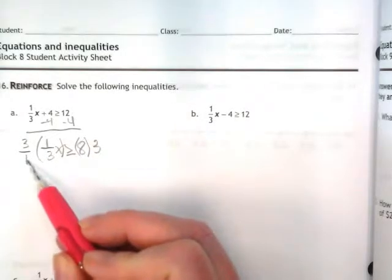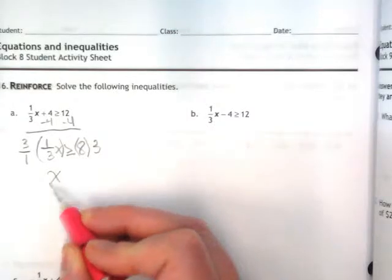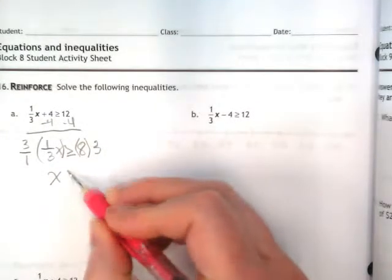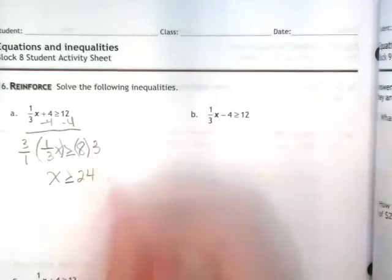So on the left side, 3 over 1 times 1 third is going to give me that invisible positive 1 that I want. So I have x is greater than or equal to 24, because 8 times 3 is 24.